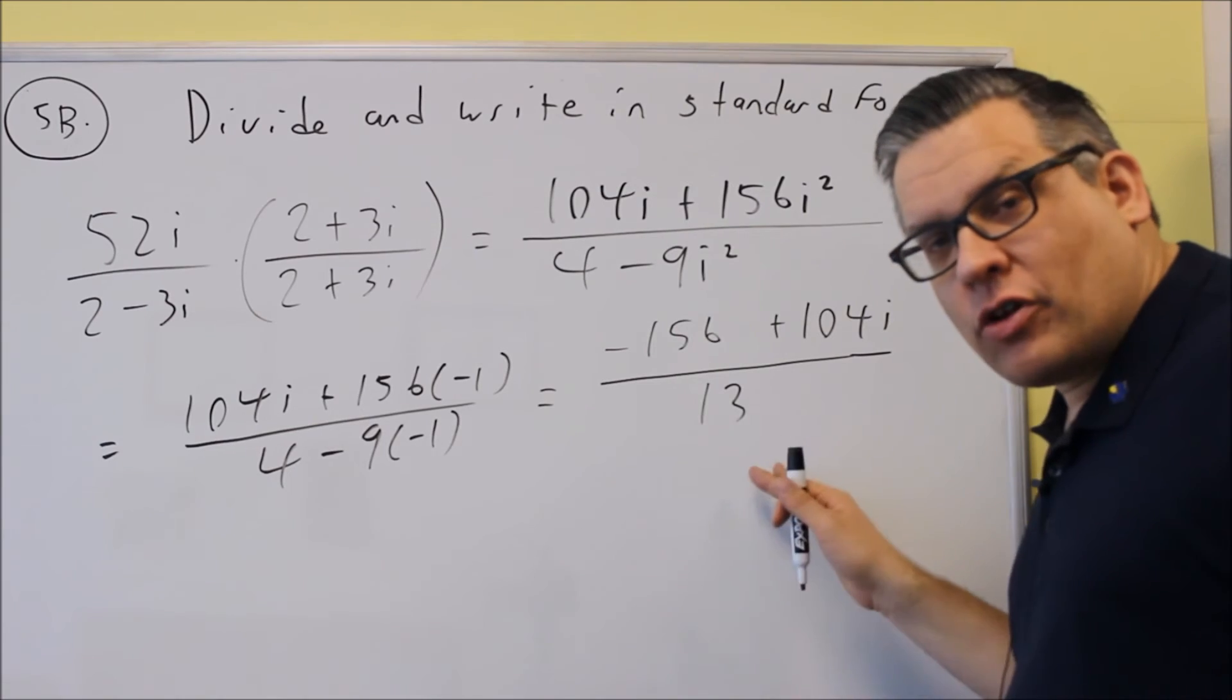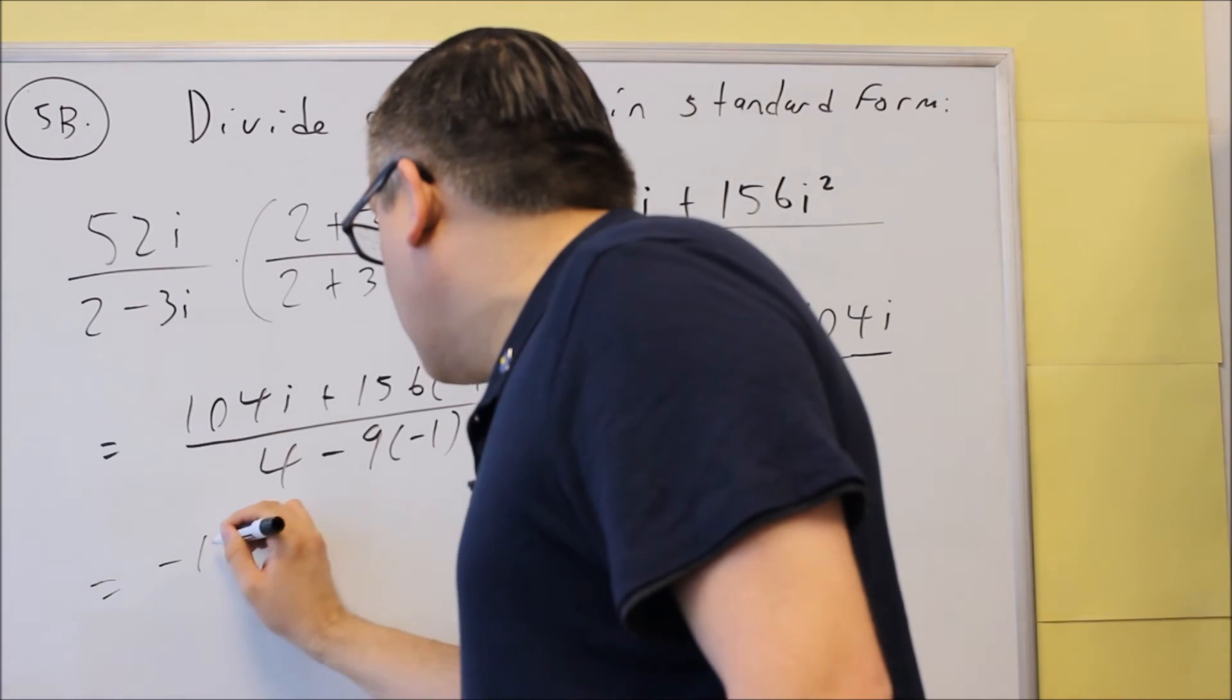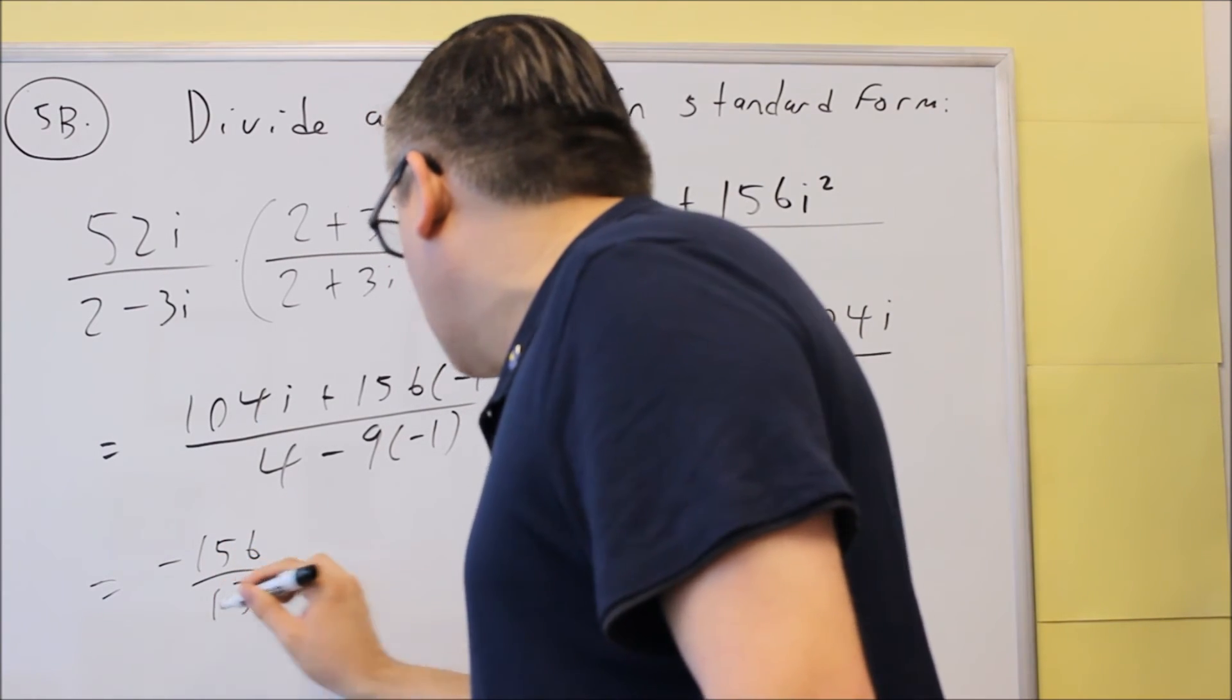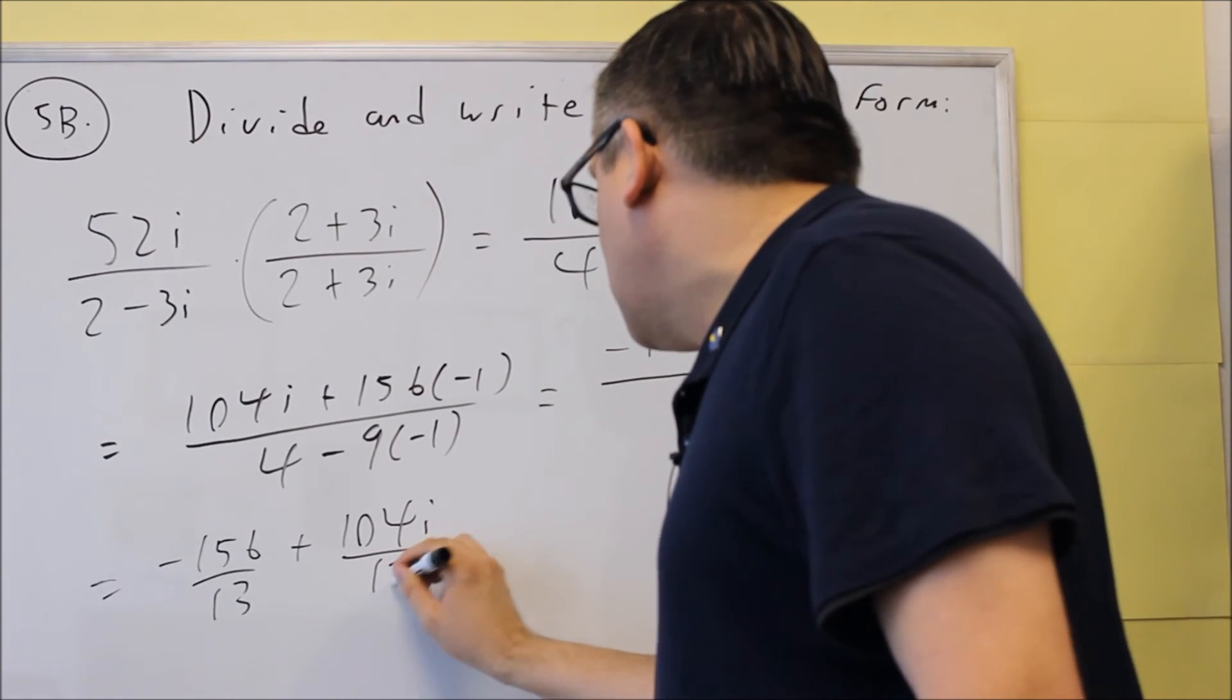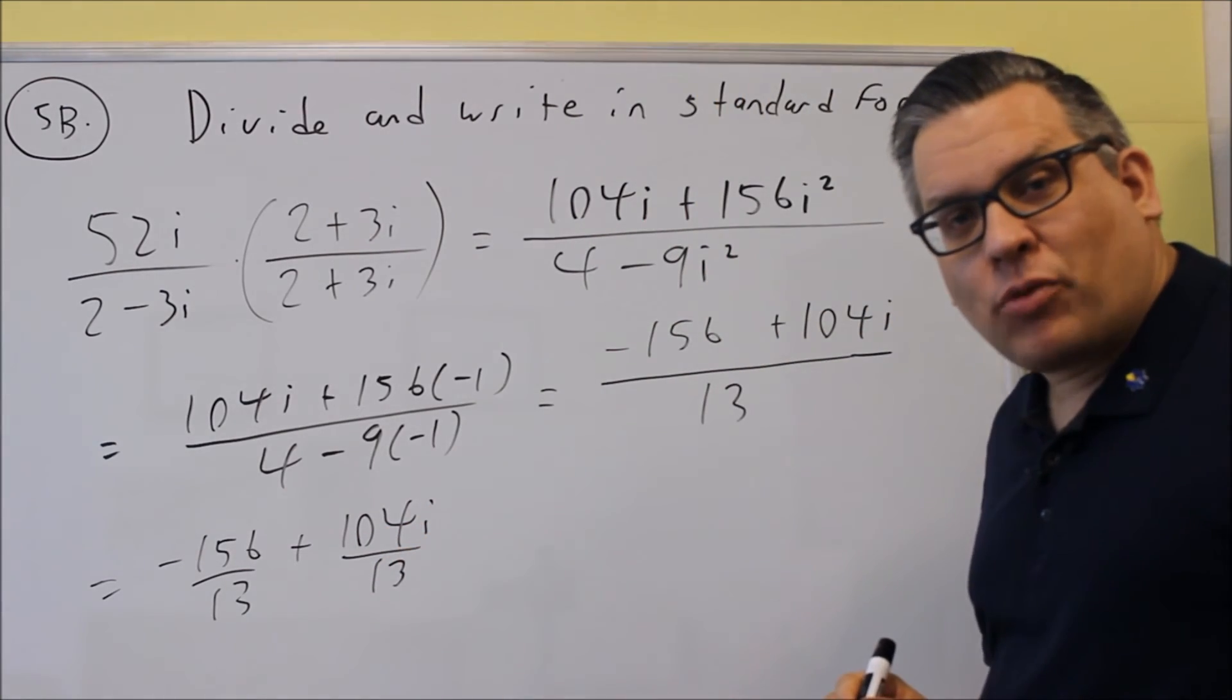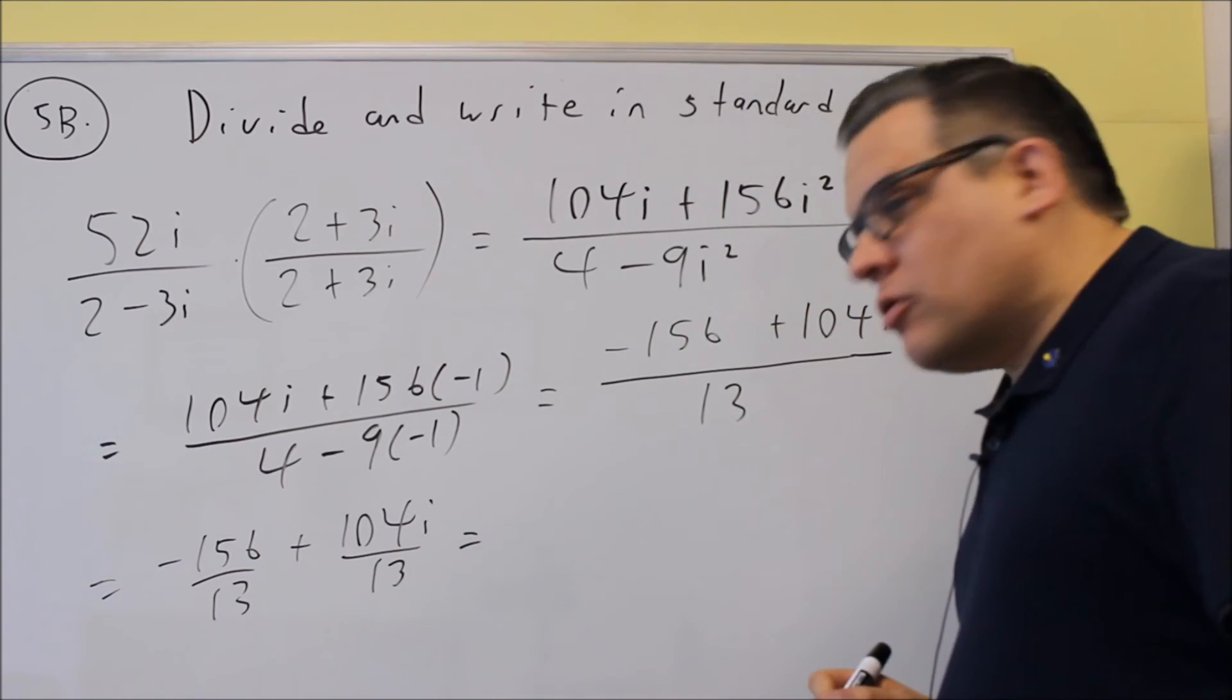It's got to be clearly two different fractions that I'm going to have. So I'm going to do negative 156 divided by 13, and then I'm going to do 104i divided by 13. So I'm going to separate both of those and then I'm just going to reduce both of those.